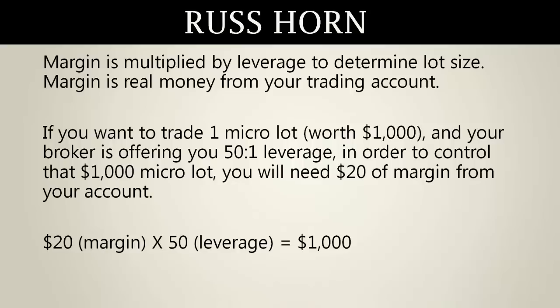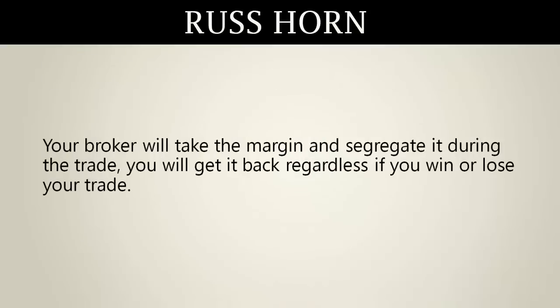So that $20 of margin times that 50 to 1 leverage — $20 times 50 gives you $1,000 — and that's one micro lot. Your broker will take the margin and segregate it during the trade. You will get it back regardless of whether you win or lose your trade.